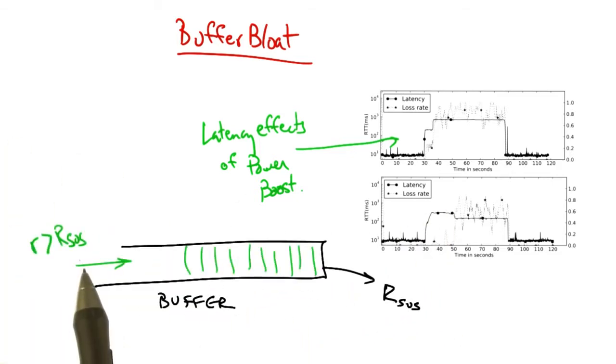In the example that we explored, the sender could send at a rate r that was bigger than the sustained rate r, without seeing packet loss.